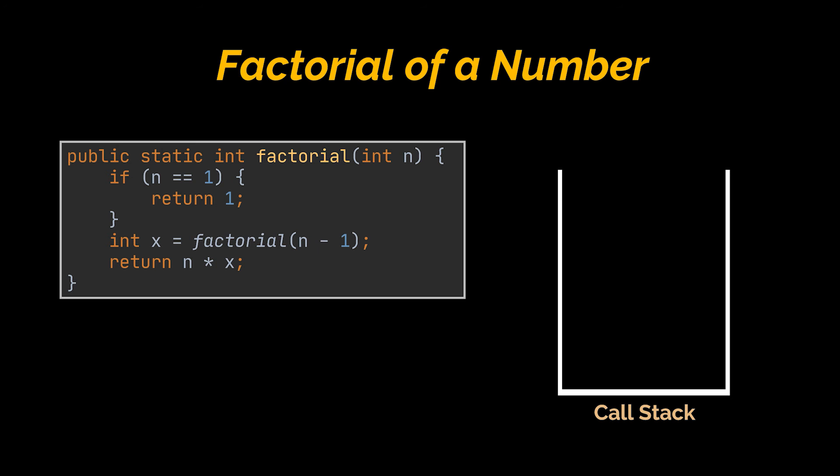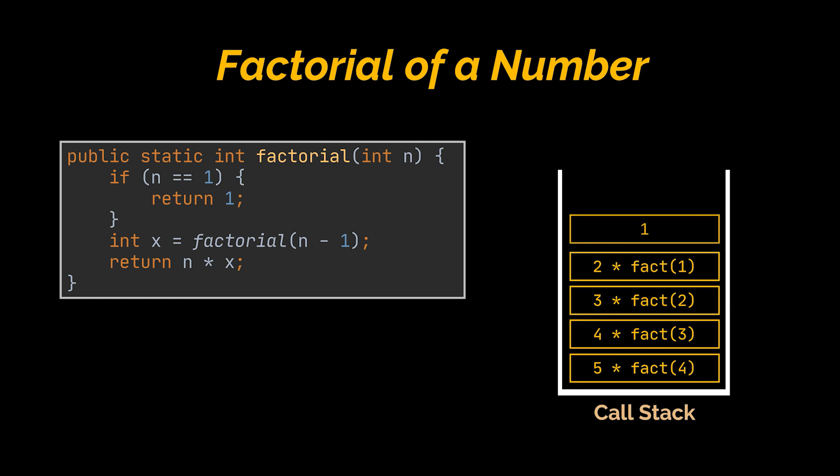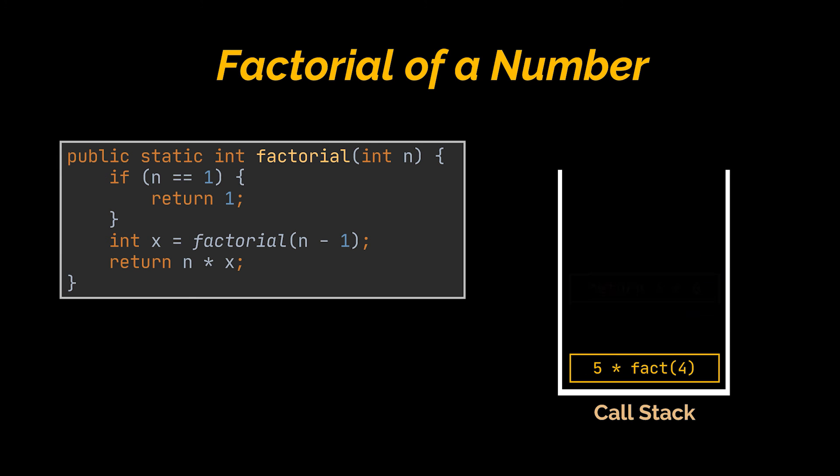So when factorial 5 is invoked, let's say, these calls will be respectively added to the stack and we won't be able to start popping from this stack before we reach the stop condition of the recursion. When that happens, the values we have will start to get replaced and the stack calls will be popped.